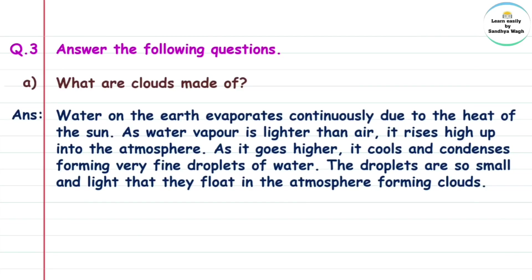Condensation means the conversion of water vapor back into water — punha paani madhe rup antar hone. As the water vapors rise higher into the atmosphere, they cool and undergo condensation, forming small droplets. These droplets are so small and light that they float in the atmosphere, forming clouds.